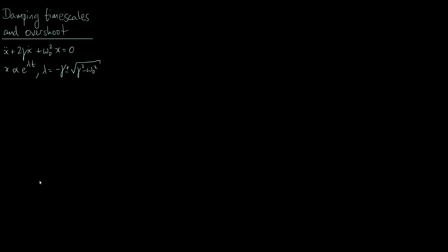From this solution we get different kinds of damping: light damping, critical damping, and heavy damping. I've already talked about critical and heavy damping in my last couple of videos. Light damping is what happens when gamma is less than omega-naught. In that case, the thing inside the square root is negative, so lambda is going to be complex with an imaginary part, and when the exponent has an imaginary part you get an oscillating solution.